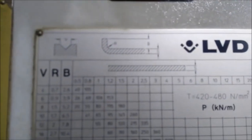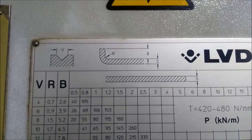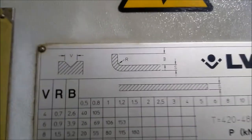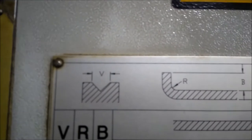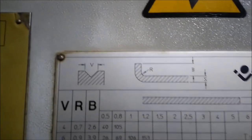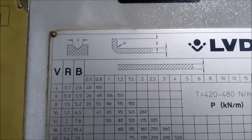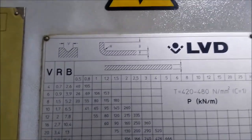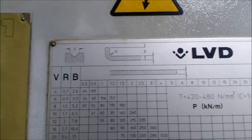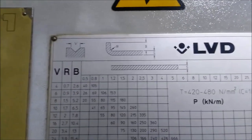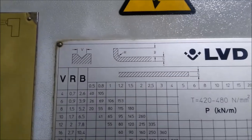We are going to select the thickness of the sheet. We are going to select the height of the sheet. If we choose the height of the sheet, we are going to select the thickness of the sheet, the height, and the width. We are going to be in the special section for the height of the sheet.